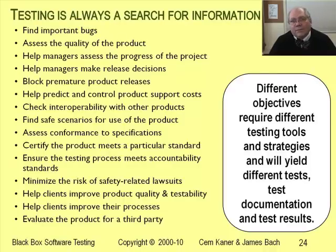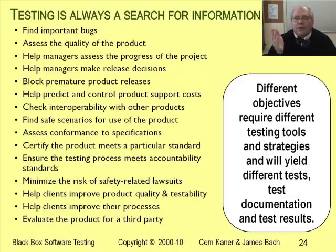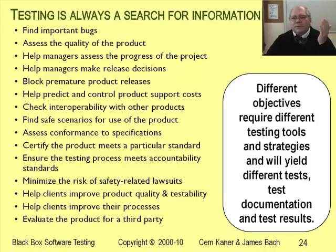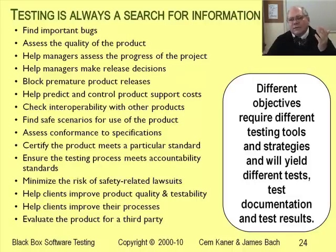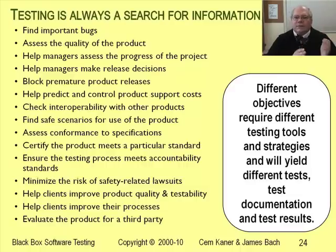An information objective is an answer to a question: what kind of information are we most concerned about learning from this testing? For example, on one project we might focus on finding as many bugs as possible — I call that bug hunting. On a different project, or a different time in the same project, we might be less concerned with bug hunting and more concerned about how well the project matches the specification, or how safe it is. We would run different tests and focus our work in different ways to optimize getting these different types of information.